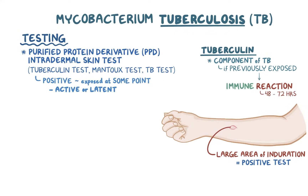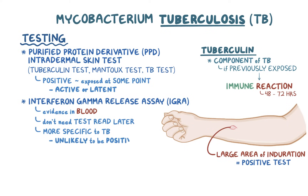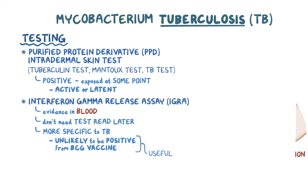As an alternative to tuberculin skin tests, there are also interferon gamma release assays, or IGRAs, which look for evidence in the blood of previous exposure to TB proteins. Since this is a blood test, you do not need to return to have the test read like you do with a PPD. The IGRA is also more specific to TB rather than other types of mycobacterial infections, and is unlikely to be positive as a result of having the BCG vaccine — a vaccine that protects against TB — in the past, which is a useful feature since BCG vaccine is given to many children around the world.